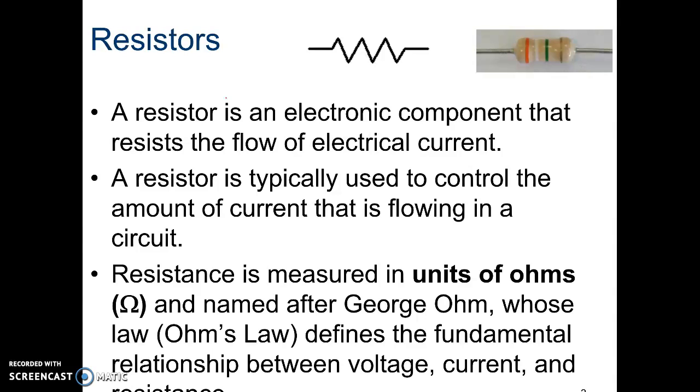As we measured before, the resistance is actually measured in ohms, and it was named after a man named George Ohm, who came up with Ohm's Law. If you remember Ohm's Law, it shows the relationship between voltage, current, and resistance. So if you remember that formula, V is equal to I times R, where R is resistance, I is current, and V is voltage. That is Ohm's Law.